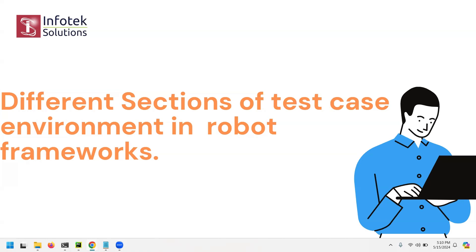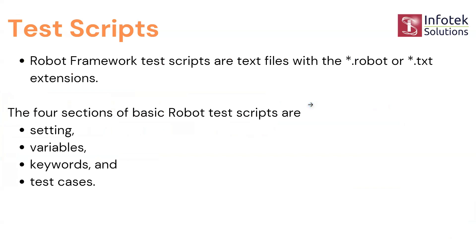When we write a test case we come across different sections: settings, variables, keywords, and test cases. When you are writing a test script, Robot Framework test files use a .robot or .txt extension. A test script contains four sections: settings, variables, test cases, and keywords. All these sections mean a lot and make our task easier.